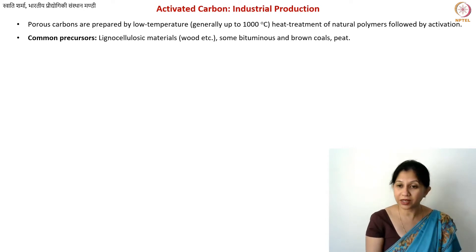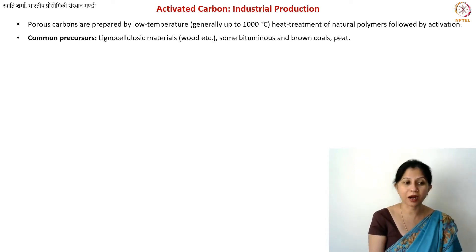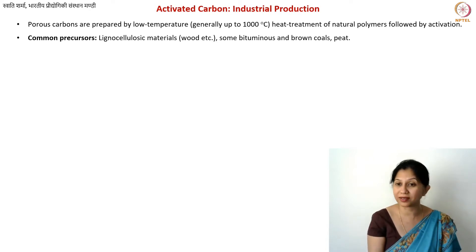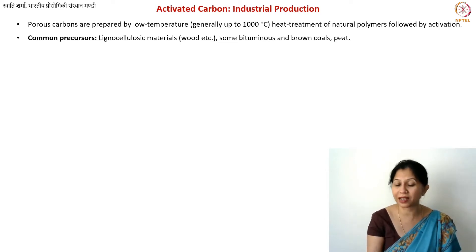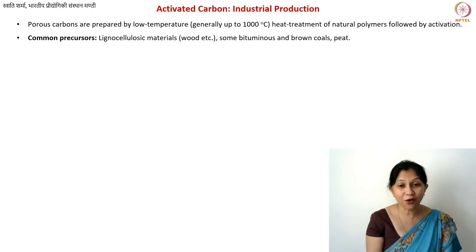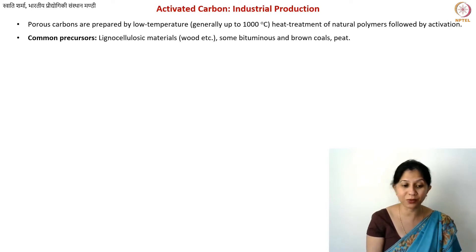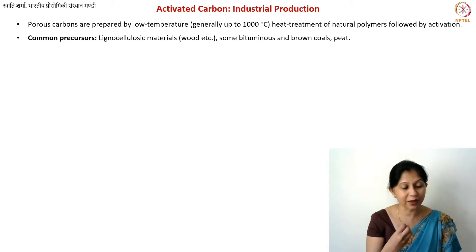Lignocellulosic materials are the primary source of activated carbon. You can also use certain types of coals. We use needle coke for making graphite, and we also use certain other types of coals for making glass-like carbons or other non-graphitizing carbons. In the case of activated or char-like carbons, you could also use certain types of coals — not coke, coal.